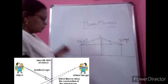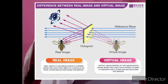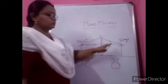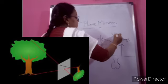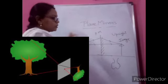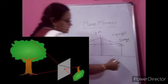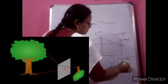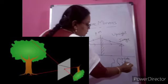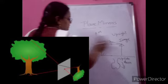In the pinhole camera, if a tree is the object, you will see the image upside down. But here, if you consider a person — the head up — in the plane mirror the image is also upright with the head up. That is called an erect or upright image. However, in the pinhole camera, or as we will learn with the concave mirror in upcoming classes, the image will be upside down — inverted. These two types of images are different, and that leads us to an important concept.